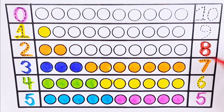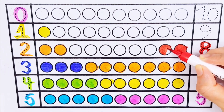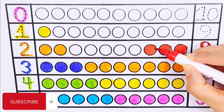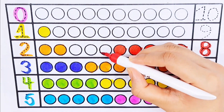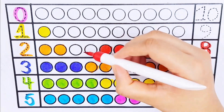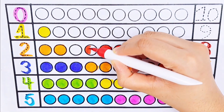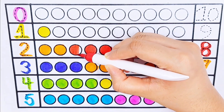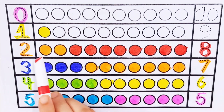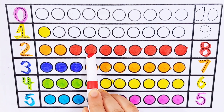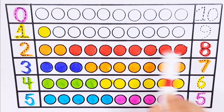Number eight. One, two, three, four, five, six, seven, eight. Two plus eight equals ten. One, two, three, four, five, six, seven, eight, nine, ten. Two plus eight equals ten.